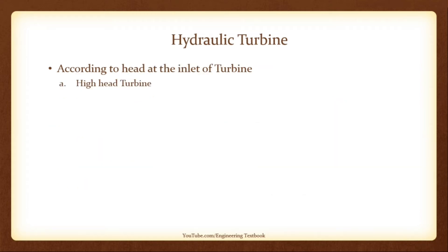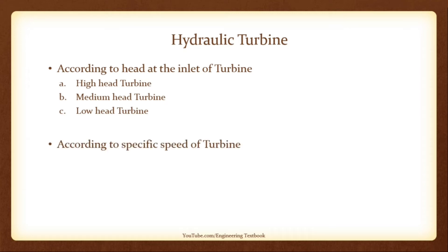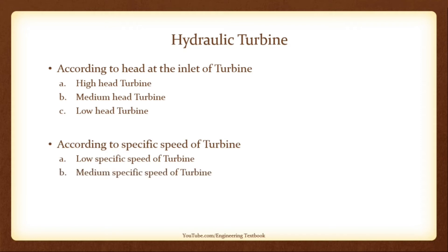According to head at inlet: A high head turbine has a net head ranging from 150 to 2000 meters or more, and requires a small quantity of water. A medium head turbine has a net head from 30 to 150 meters and requires a moderate quantity of water. A low head turbine has a net head less than 30 meters and requires a large quantity of water. According to specific speed: low specific speed turbines have specific speed less than 50; medium specific speed turbines range from 50 to 250; high specific speed turbines have specific speed more than 250.